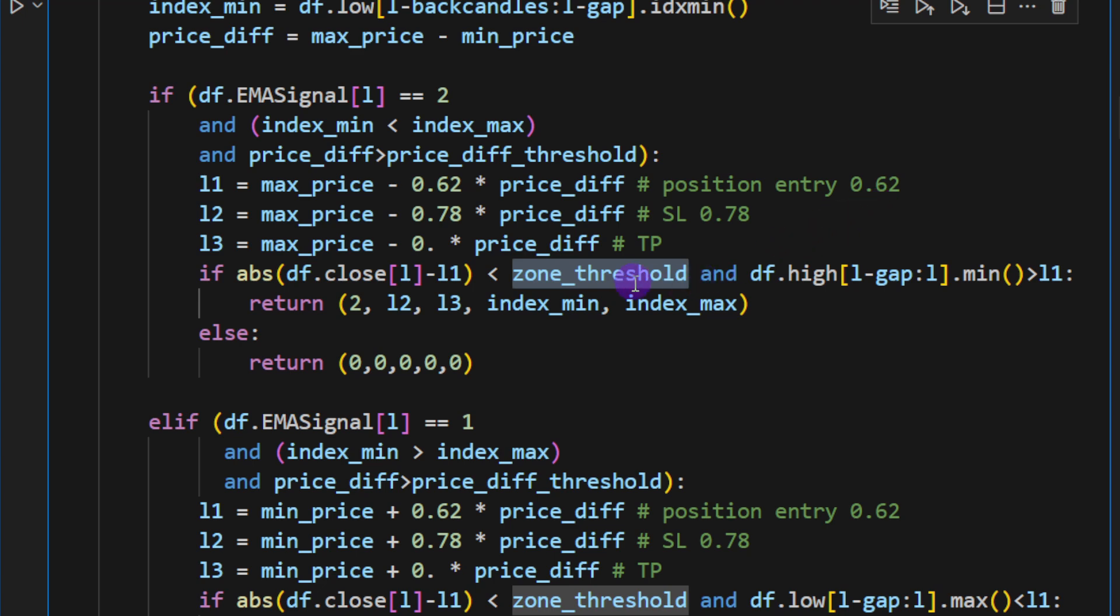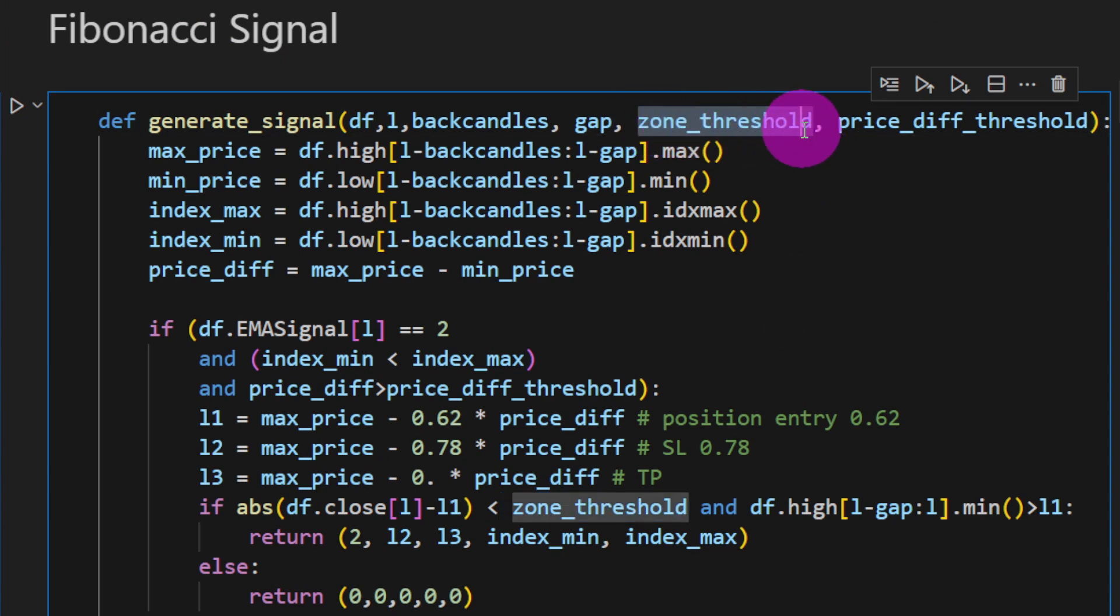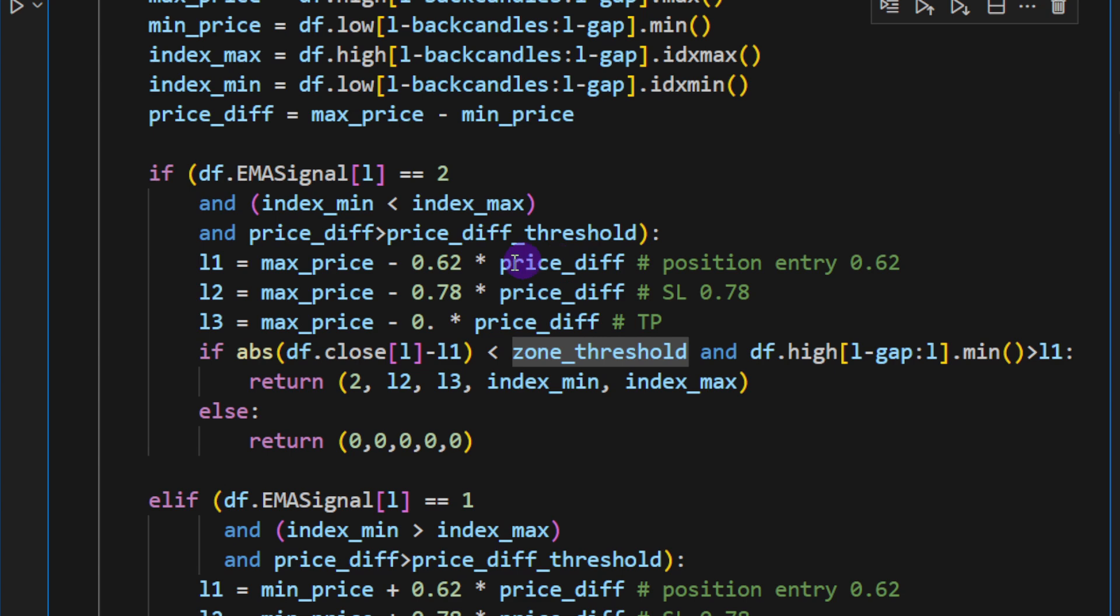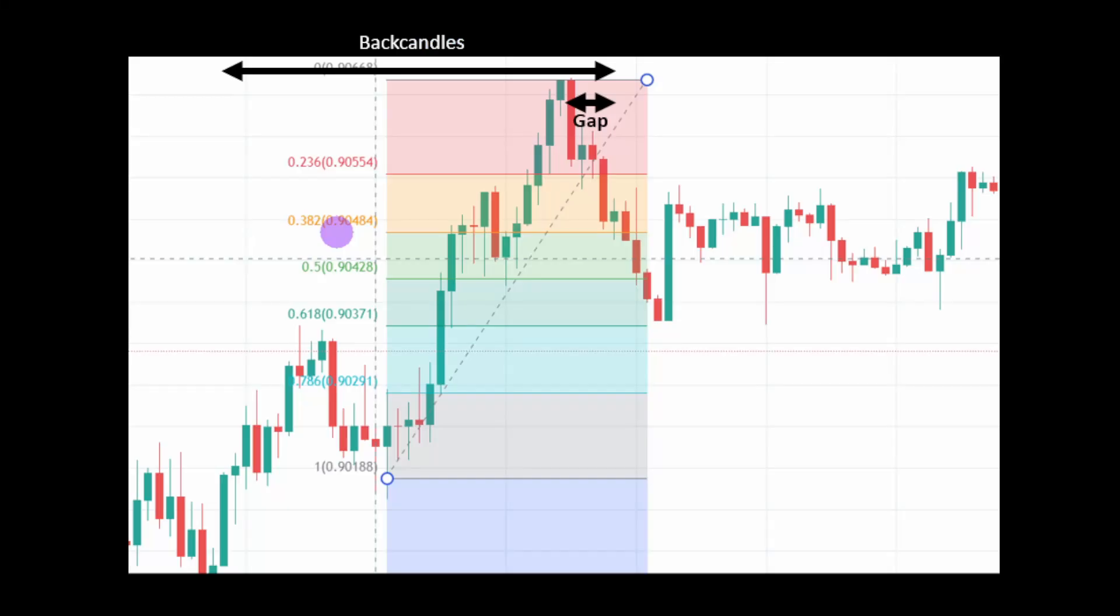So we have to have an uptrend, a certain order between the different fractals, and exceed the price diff threshold. If all these conditions are met, we can start checking the Fibonacci levels. L1 equals the maximum price minus 62% of the price difference. Level 2 is the maximum price minus 78% of the price difference. Level 3 is minus 0 times the price difference.